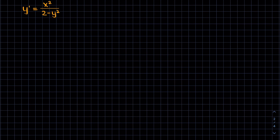So let's try an example. The first thing we're going to want to do here is to multiply both sides by 2 minus y squared. So we'll get 2 minus y squared multiplied by y prime equals x squared. Now we can see that all of the y's are on the left hand side and all of the x's are on the right hand side.